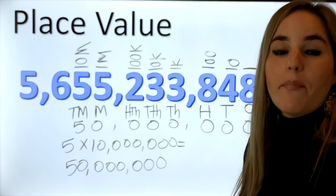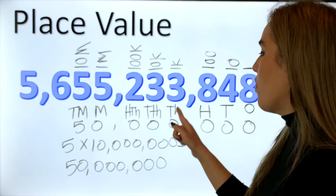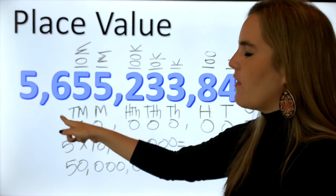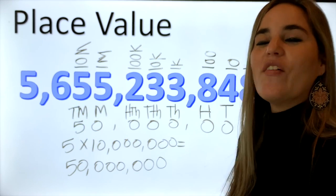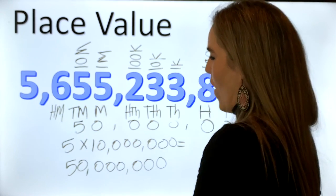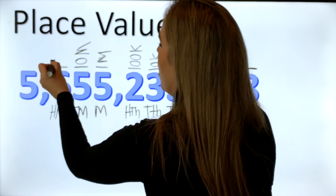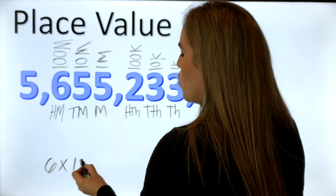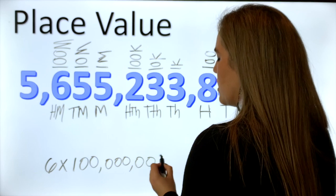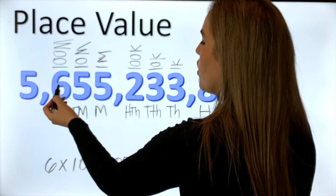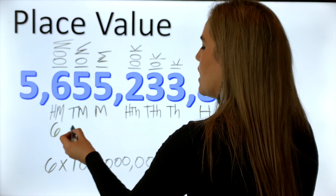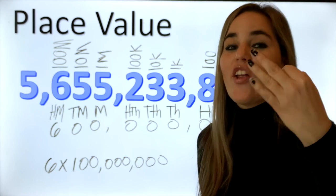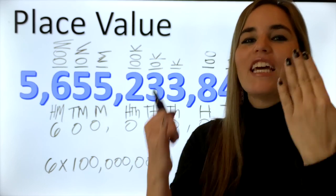Another thing to notice is the pattern: we have ones, tens, hundreds — then one thousands, ten thousands, hundred thousands — and now one million, ten million. What do you think is the next place value? If you said one hundred million, you are one hundred percent getting it! The value of this six is in the hundred millions place, which means six groups of one hundred million. One hundred million has six zeros. Six times one hundred million equals six hundred million — one hundred million, two hundred million, three hundred million, four hundred million, five hundred million, six hundred million.